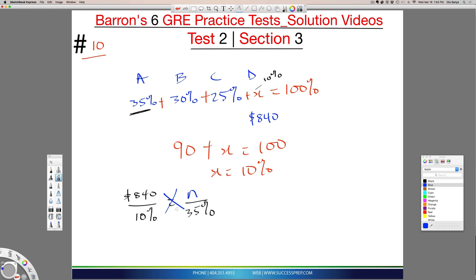So now we could just cross multiply. In this question as well, it's helpful just to go ahead and use a calculator. So it would be 10N equal to 35 times 840, and then divide by 10. Technically, these zeros will cancel, so you try that out. You could just use a calculator to multiply 35 times 84.